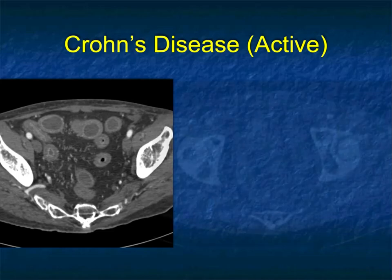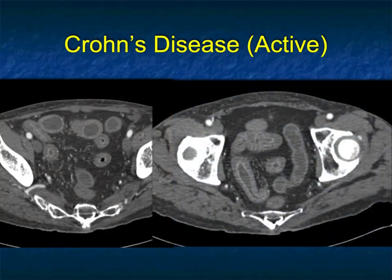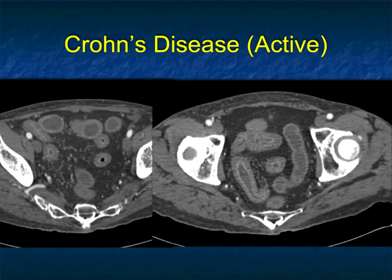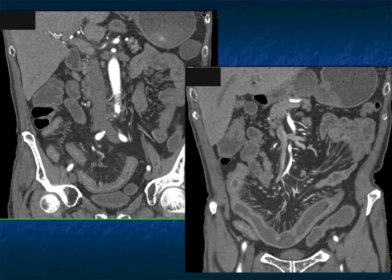Looking at another example of bowel, we talk about a target sign, which you can see very nicely here. People talk about a target sign for ischemia, but you can see a target sign with Crohn's disease, a target sign with inflammatory bowel disease of other etiologies including infectious etiologies, and with graft versus host. So a target sign is a very good finding that there's abnormality in the bowel — yes, it could be ischemia, but it could simply be inflammatory disease as well.